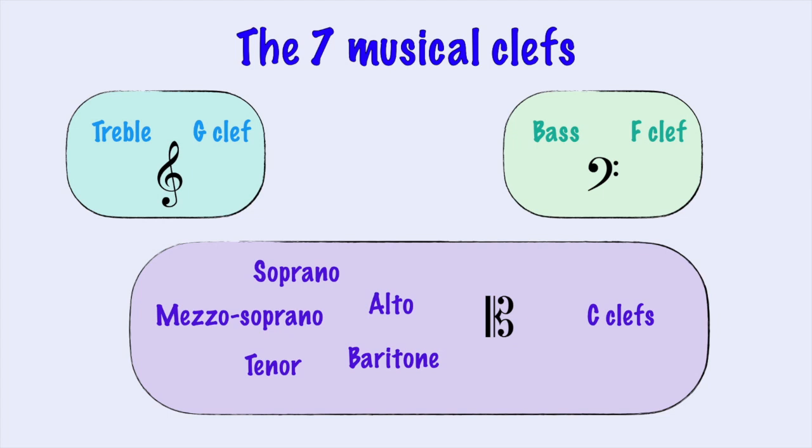There is a reason for that. The clefs are: treble, soprano, mezzo soprano, alto, tenor, baritone, and bass. Try to remember them in order: treble, soprano, mezzo soprano, alto, tenor, baritone and bass. Treble and bass are at the beginning and at the end. In the middle there are the five C clefs: soprano, mezzo soprano, alto, tenor, and baritone.